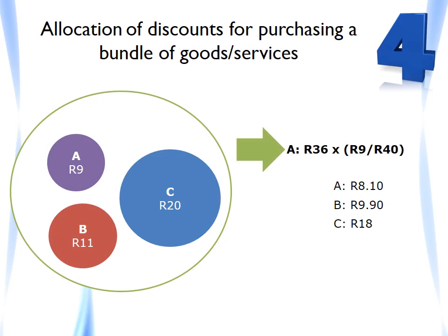An example of how this allocation method can be done: assume A, B, and C have been identified as distinct performance obligations. If sold separately, A sells for R9, B for R11, and C for R20 — combined, the sum of their stand-alone selling prices is R40. However, in this transaction they are being sold at a 10% discount, at R36. The standard requires this R4 discount to be applied proportionately based on the relative stand-alone selling prices, resulting in revenues being recognised as and when each performance obligation is transferred to the customer.